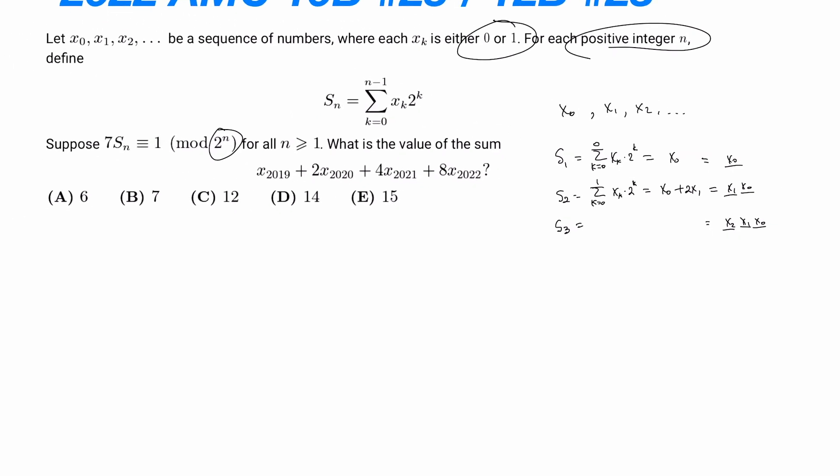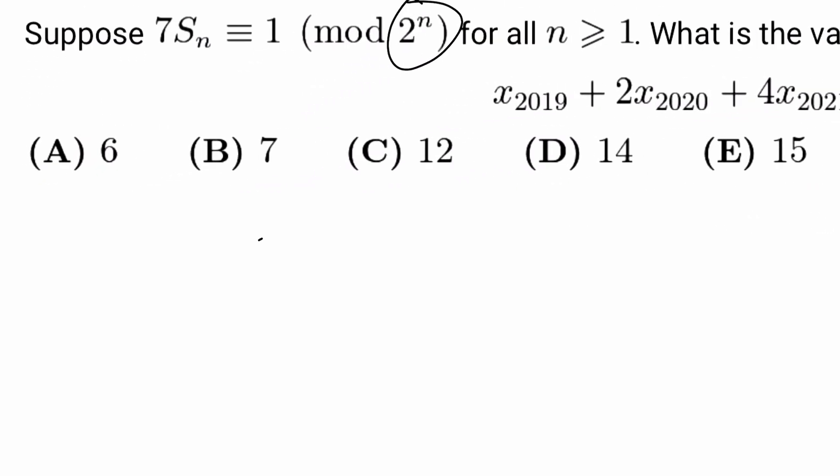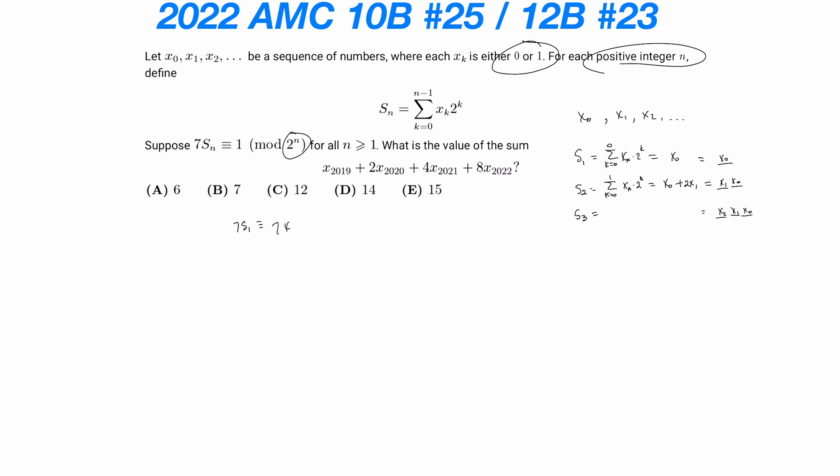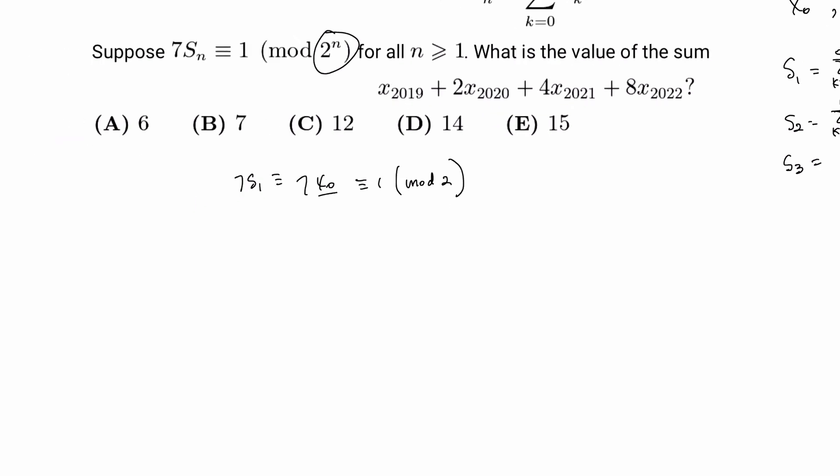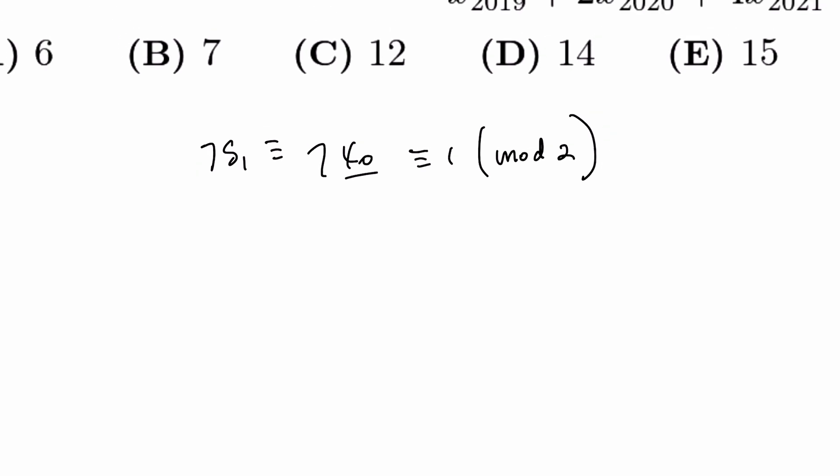So let's take a look at the condition. Suppose 7Sn is congruent to 1 mod 2 to the nth for all n greater than or equal to 1. Let's try S1 first. 7S1 is 7 times x0, which is 1 mod 2. We know that this element is 1 mod 2 somehow, and this is either 0 or 1. If this is 0, it just cannot be, so x0 has to be 1 in order for this number to be odd.